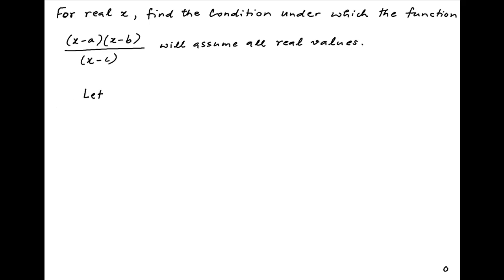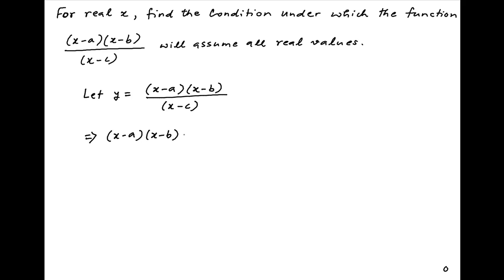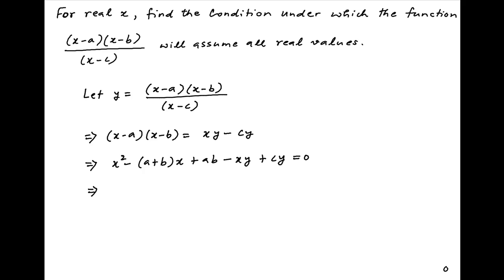Let's denote the given function by y. Therefore y is equal to (x - a)(x - b) divided by (x - c). Cross multiplying, we get (x - a)(x - b) = y(x - c) = xy - cy. This implies that x² - (a + b)x + ab - xy + cy = 0, which can be rearranged as x² - (a + b + y)x + ab + cy = 0.